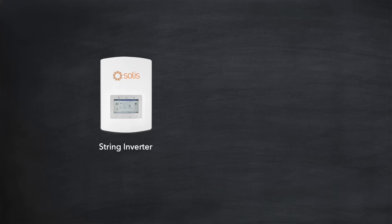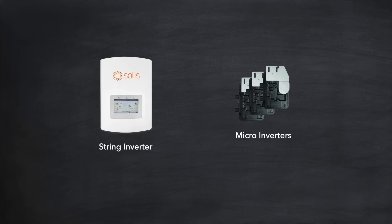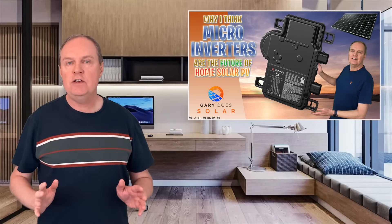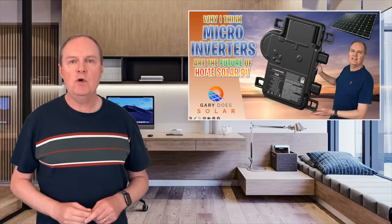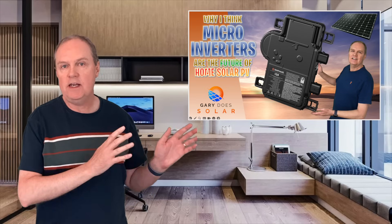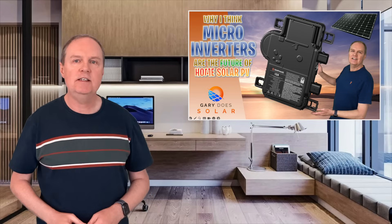Or instead of a string inverter, you can install microinverters onto all your panels. Each microinverter optimizes the voltage of a single panel so as to maximize the DC power output, which is then converted to AC at the panel itself. If you're interested in learning more about microinverters, feel free to check out my video here — the link is in the description.